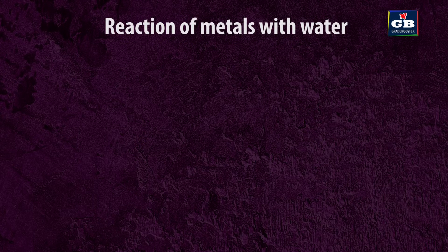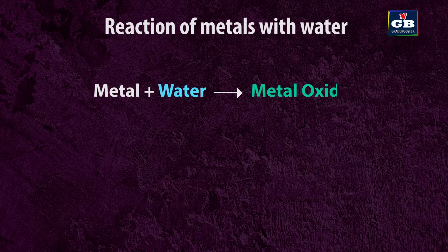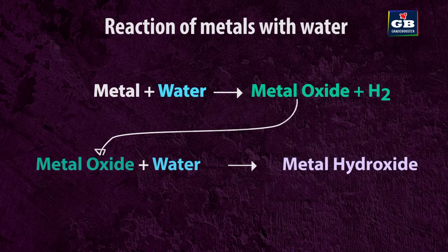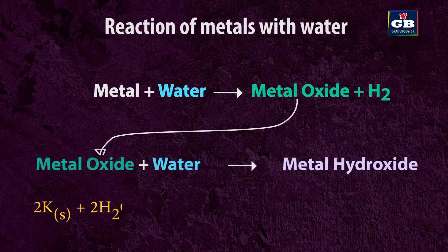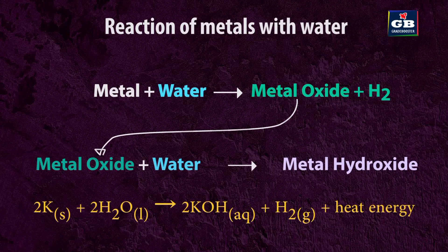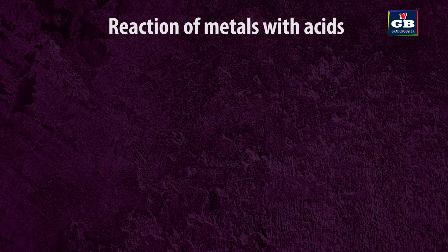Reaction of metals with water. Metals react with water and produce metal oxide and hydrogen. This metal oxide further dissolves in water and produces metal hydroxide. Metal + water → metal oxide + hydrogen; metal oxide + water → metal hydroxide. Example: 2K + 2H₂O → 2KOH + H₂ + heat energy.